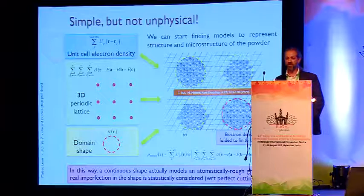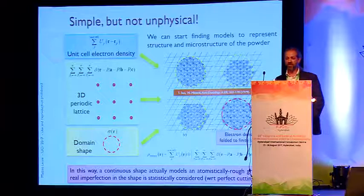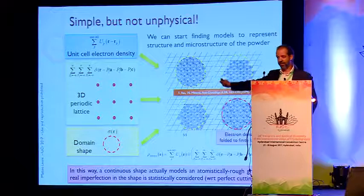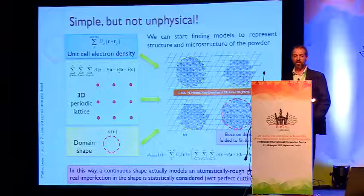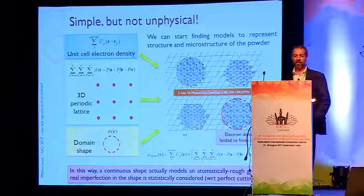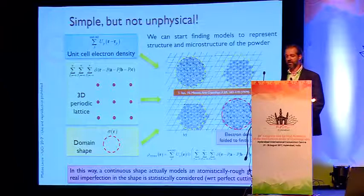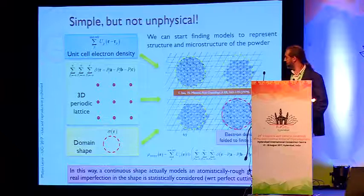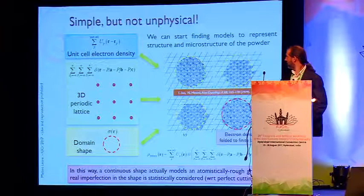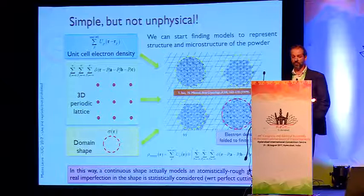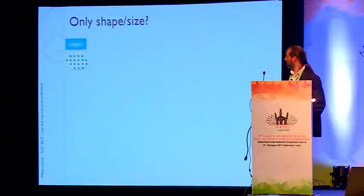To build up a diffraction pattern starting from the atoms, not from the data but from the specimen, you need to consider the lattice, the electron density, and the fact that you have finite domains. You need to be smart in how you put those things together, trying to preserve entire atoms while realizing that in some cases you can use a shape like a round domain. If you apply this shape to the lattice and then put atoms in the lattice, you obtain something that is atomistically round. Little details can play a huge role in getting the physics right to build up the diffraction pattern.